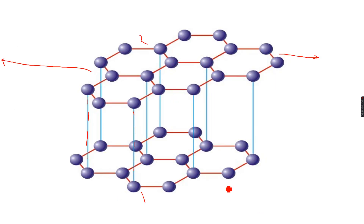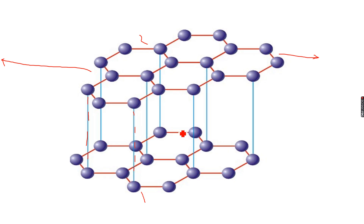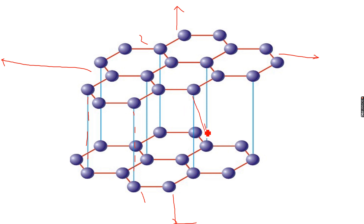Graphite conducts electricity because each carbon atom has one free electron. Each carbon atom is bonded to three other carbon atoms, leaving one electron free. The structure is incomplete and keeps expanding — the layers expand in all directions within one plane.